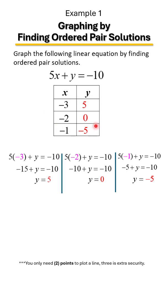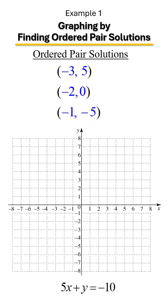Now we have three ordered pair solutions, and we're going to use them to sketch our line. We'll plot the points on the rectangular coordinate system: first, over negative 3 on the X-axis and up 5; next, over negative 2 and at 0; and last, over negative 1 and down 5. And there we have our line.